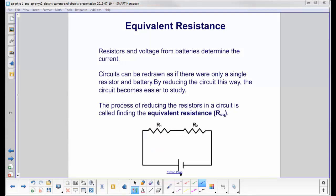Resistors and the voltage delivered by the battery determine the current. We use Ohm's law, I equals V over R.